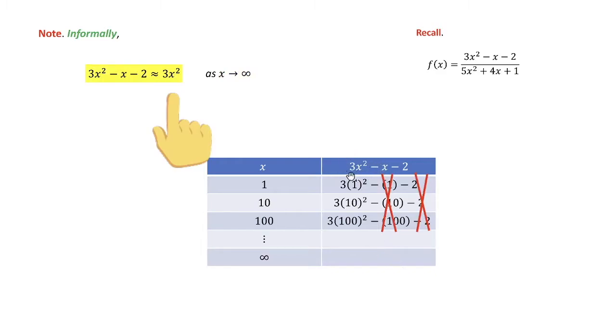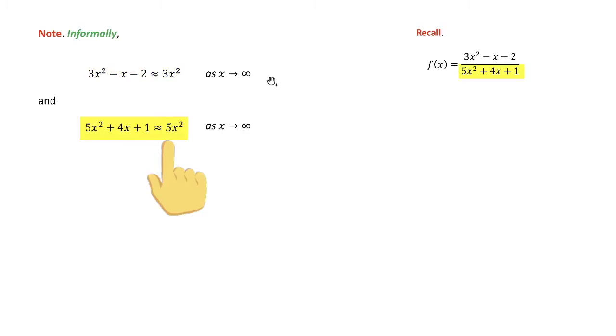So once x gets large, and we're not even scratching the surface, these terms don't matter. Only the highest order term matters. So what I'm saying when x gets large, informally, is that the only thing this looks like is 3x squared. It's like when I take my glasses off, it all looks the same to me. Only the 3x squared matters. And there's nothing wrong with that. That's an informal argument. It's an intelligent argument. In this case, it's correct.